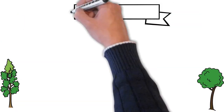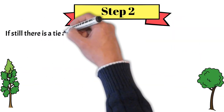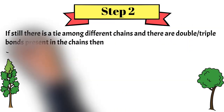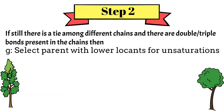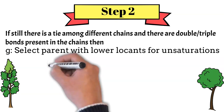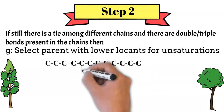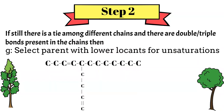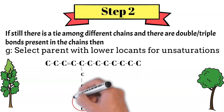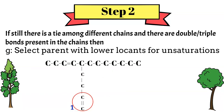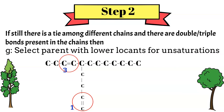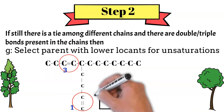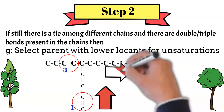If there is still a tie and both double and triple bonds are present in the chains, select the parent chain which has got the lower locant for the unsaturations. This structure has two chains with the same length and same number of double bonds. The only difference is that in one chain the double bond is at carbon number one, while in the other chain it is at carbon number three. Therefore, we will select the chain where the double bond is at the lower position.